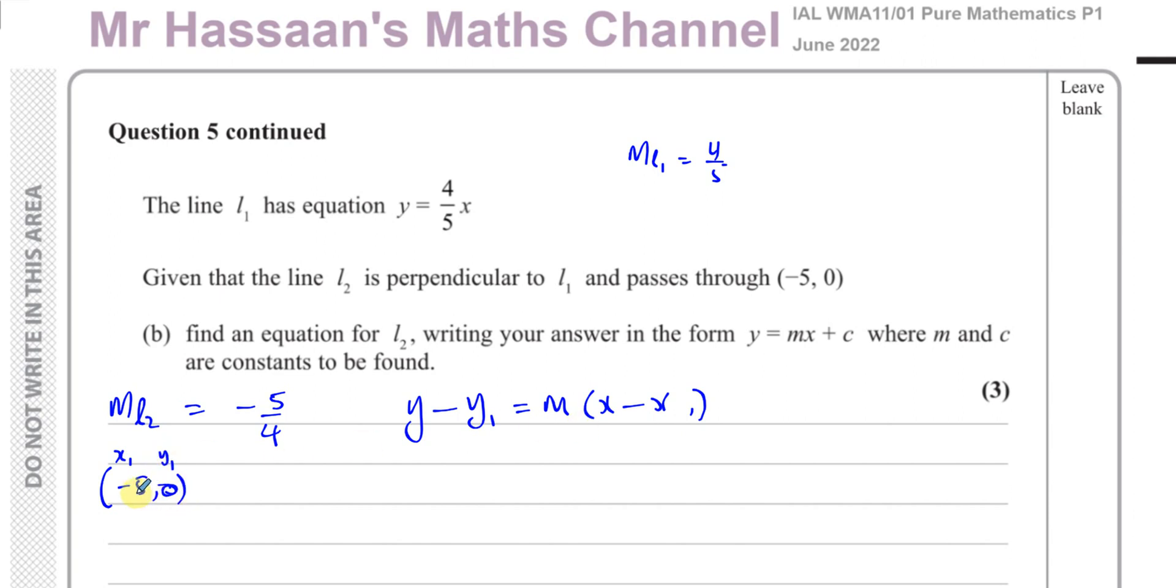So as long as we have a point on the line and the gradient, we can find the equation of the line. So we have Y minus the Y value, which is 0, equals M, which is minus 5 over 4, times X minus the X value, which is minus 5.